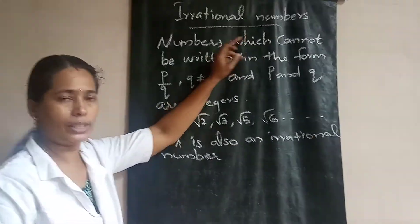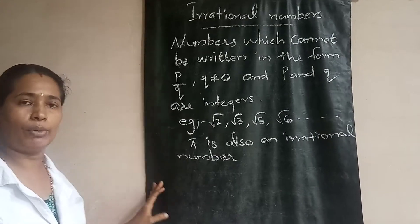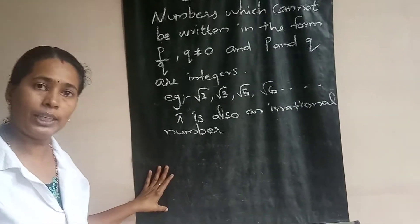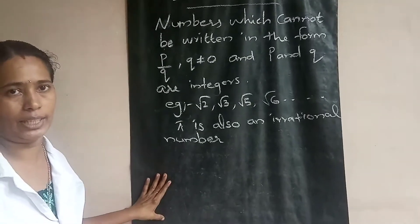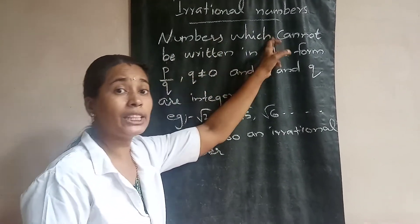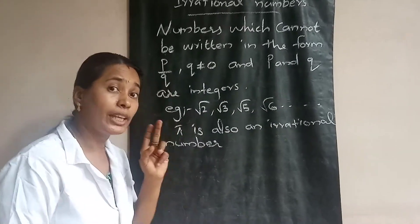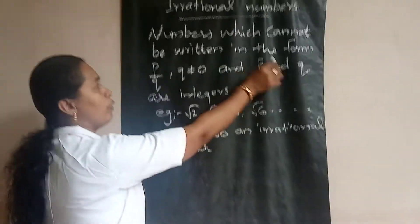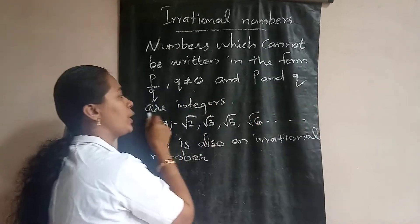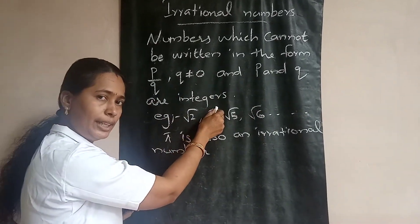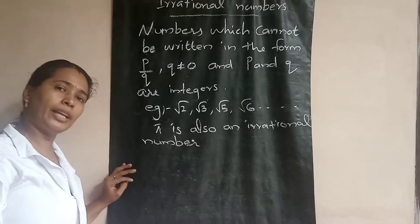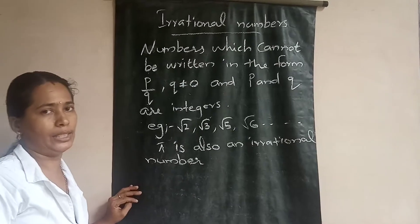Irrational numbers — what are irrational numbers? From the word itself it is very clear: not rational. Numbers which are not rational. So we can define them as numbers which cannot be written in the form P by Q, where Q is not equal to 0 and P and Q are integers. For example, which numbers can be irrational? Those which are not rational.